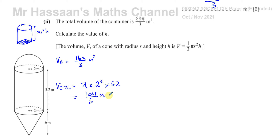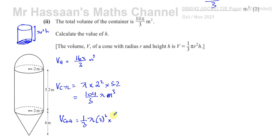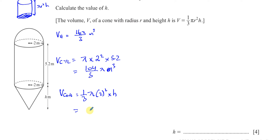The volume of the cone, as given by the formula sheet, is (1/3)πr²h. That's (1/3) × π × 2² × h, which gives us 4πh/3 meters cubed, expressed in terms of the unknown h.